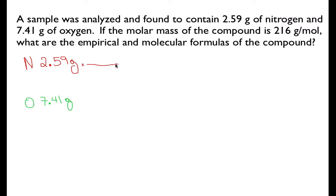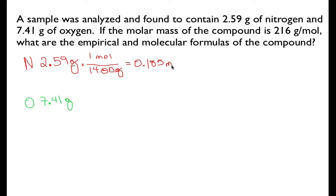We're going to take the grams of nitrogen and convert it to moles of nitrogen using the molar mass. The molar mass of nitrogen is 14 grams per mole, so our sample contained 0.185 moles of nitrogen.